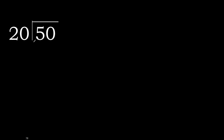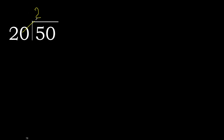50 divided by 20. 5 is less, therefore next. 50 is not less, so with 50, which number multiplied by 20 is nearest to 50 but not greater? 20 multiplied by 3 is 60 — 60 is greater. 20 multiplied by 2 is 40, which is not greater. Subtract: 50 minus 40 is 10.